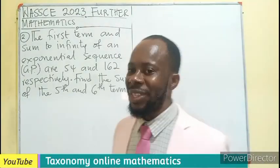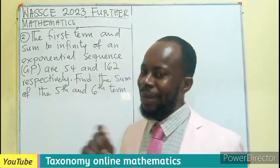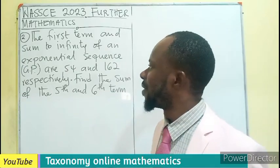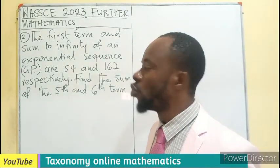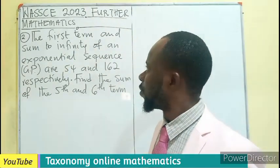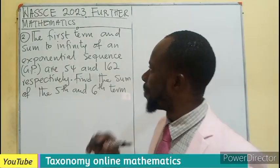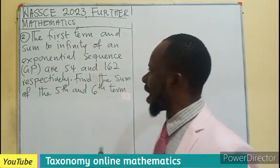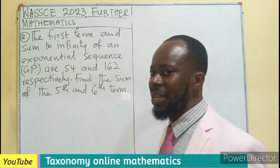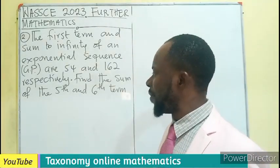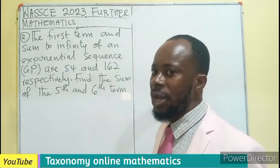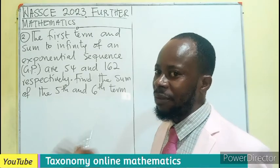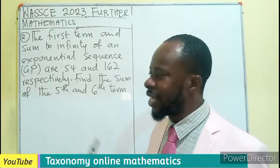Welcome, WACI 2003 Further Mathematics, the elective subject. Question number 2 of section B. The first term and sum to infinity of an exponential equation GP are 54 and 162 respectively. Meaning the first term is 54, the sum to infinity is 162. Find the sum of the fifth and the sixth term.